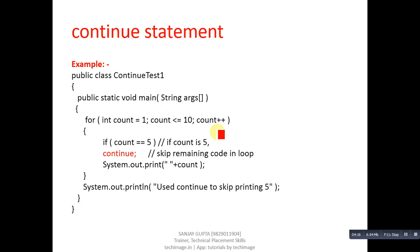The loop repeats ten times, but because of continue it executes the print statement only nine times. The output will be: 1, 2, 3, 4, 6, 7, 8, 9, and 10 — five will be skipped. After completion of the loop, a println will print 'used continue to skip printing five', and that message will appear on the console.